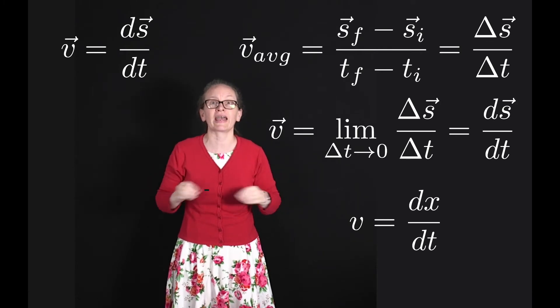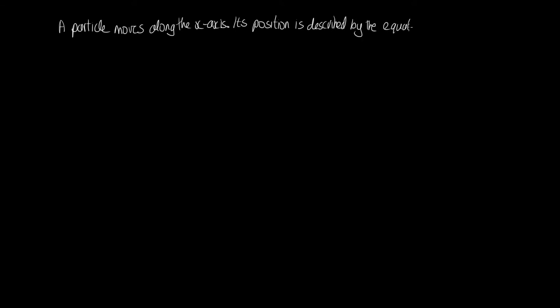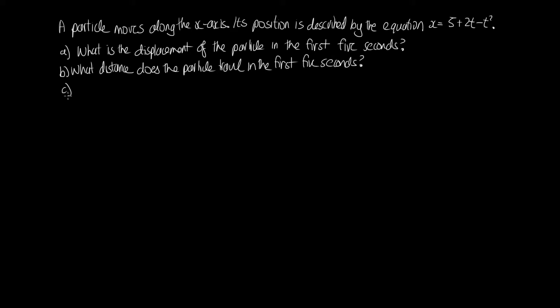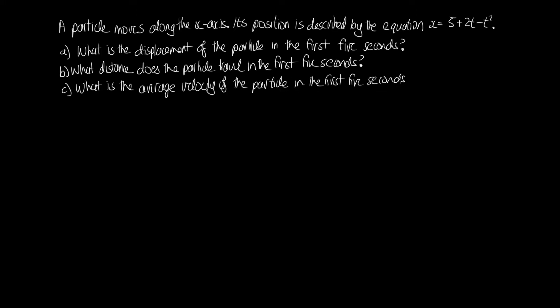Let's have a try at a problem. A particle moves along the x-axis. Its position is described by the equation x equals 5 plus 2t minus t squared. Part a: what is the displacement of the particle in the first five seconds? Part b: what distance does the particle travel in the first five seconds? Part c: what is the average velocity of the particle in the first five seconds? And part d: what is the instantaneous velocity of the particle at t equals zero and t equals five seconds?